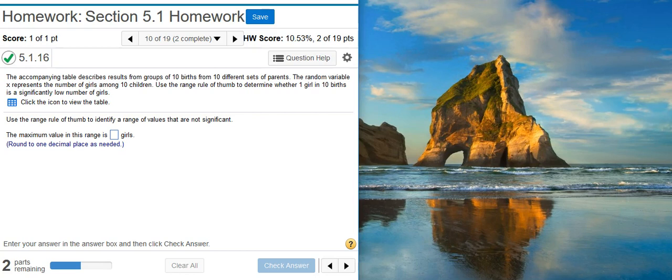Use the range rule of thumb to determine whether one girl in 10 births is a significantly low number of girls.